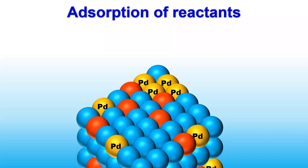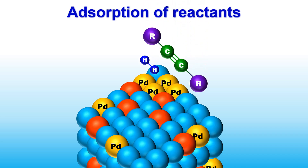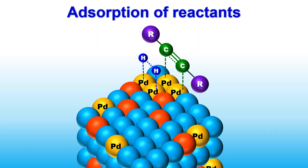Now let us see the catalytic action of this catalyst. The first step in the catalytic cycle is adsorption of reactant molecules over the surface of the catalyst. Both the alkyne and hydrogen molecules are diffused onto the surface of the catalyst and get adsorbed at the sites of palladium atoms. This results in the weakening of H-H and C≡C bonds, facilitating the interaction between carbon and hydrogen atoms.